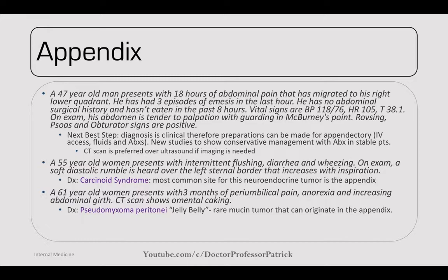A 55-year-old woman presents with intermittent flushing, diarrhea, and wheezing. On exam there's a soft diastolic rumble over the left sternal border increasing with inspiration — tricuspid stenosis sound. This is carcinoid syndrome. The most common site for this neuroendocrine tumor is actually the appendix, so it's important during colonoscopies to try to reach the appendix and document any neuroendocrine tumors.